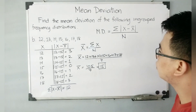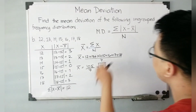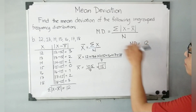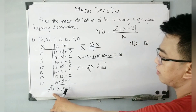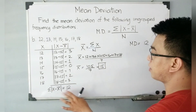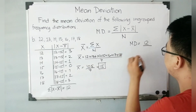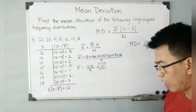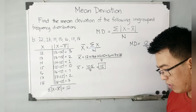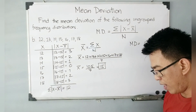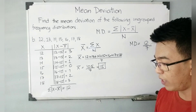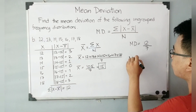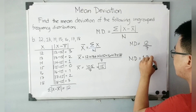The summation of the absolute value of x minus x-bar is equal to 12. Using the formula, the mean deviation is equal to 12 over the number of elements, which is 7. Calculating 12 divided by 7 gives 1.71428571429, so rounding to two decimal places, the mean deviation is simply 1.71.